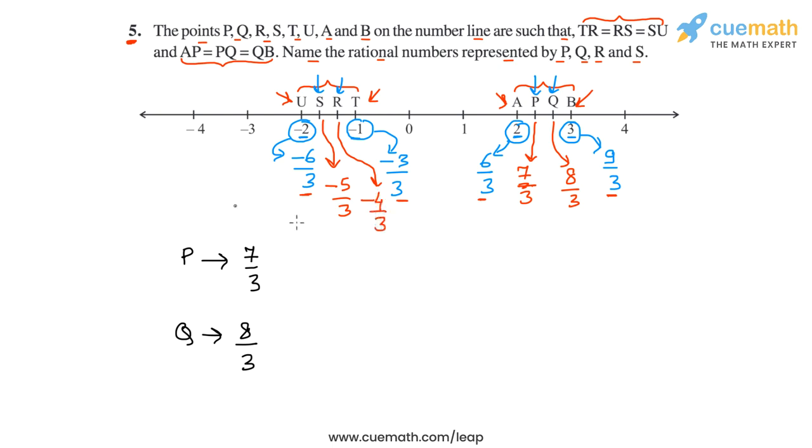So let's write this as well. We must have R representing minus 4 by 3, and S represents minus 5 by 3.